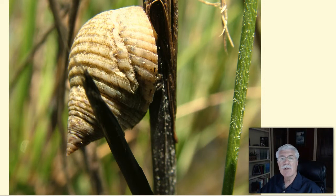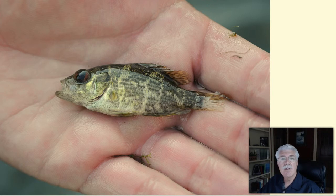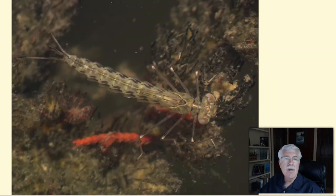Secondary consumers eat primary consumers. Bluegills are secondary consumers. They eat insects, crustaceans, and small fish. Secondary consumers can be carnivores or omnivores.